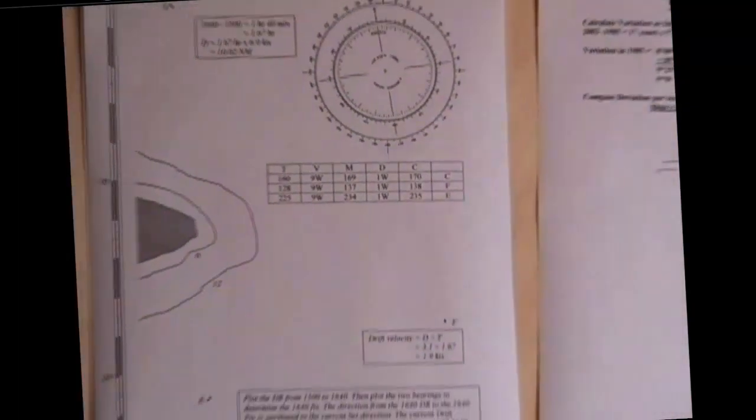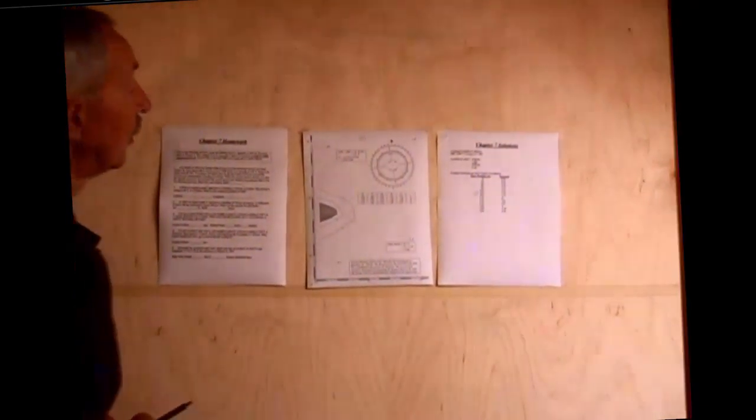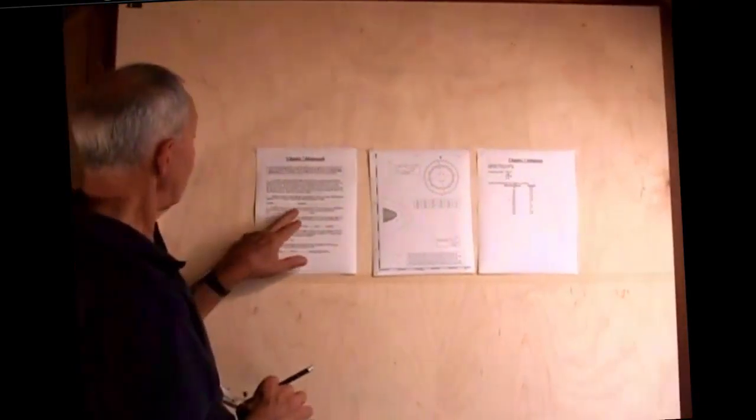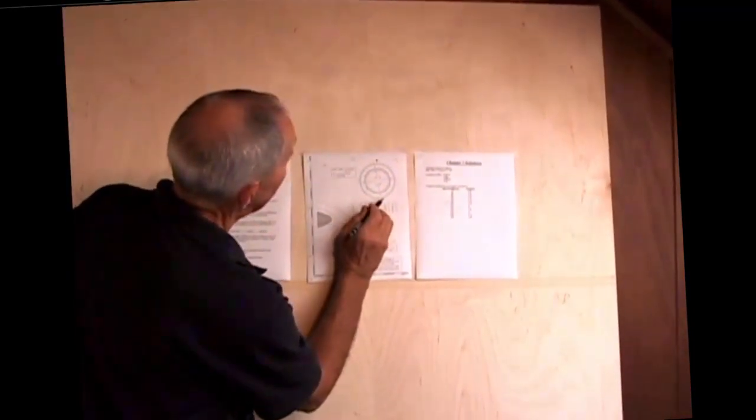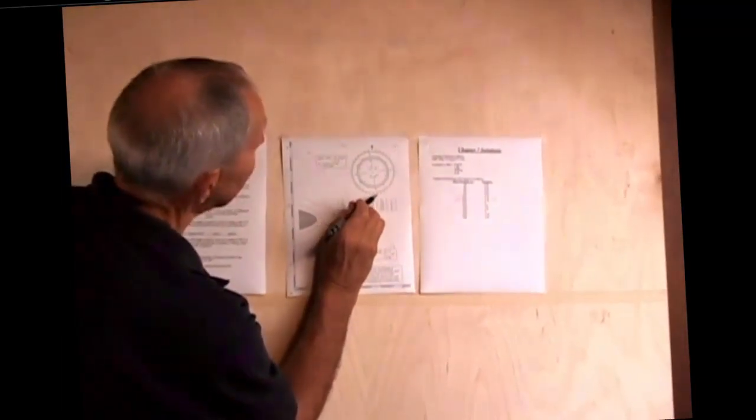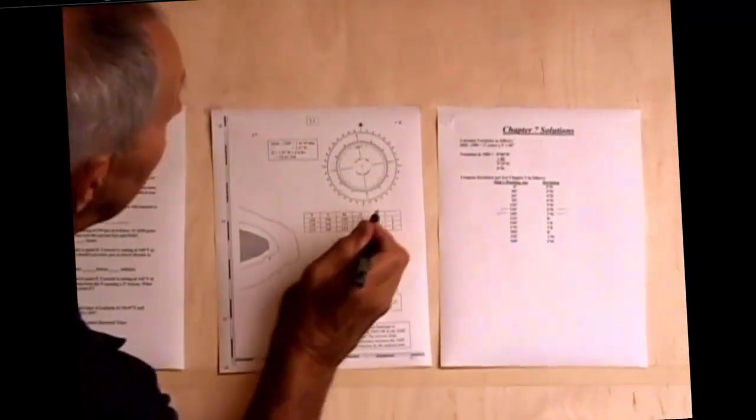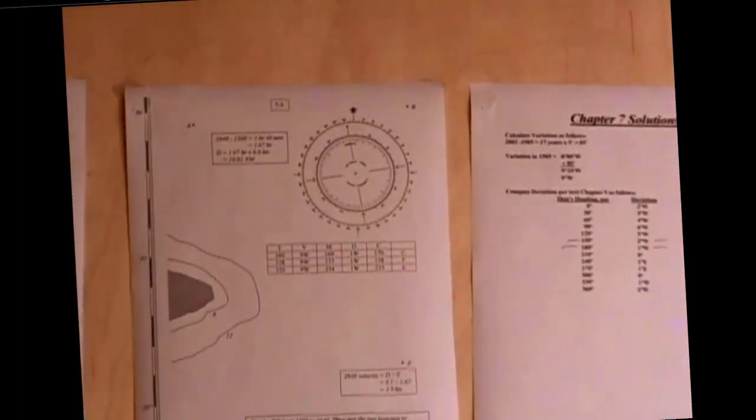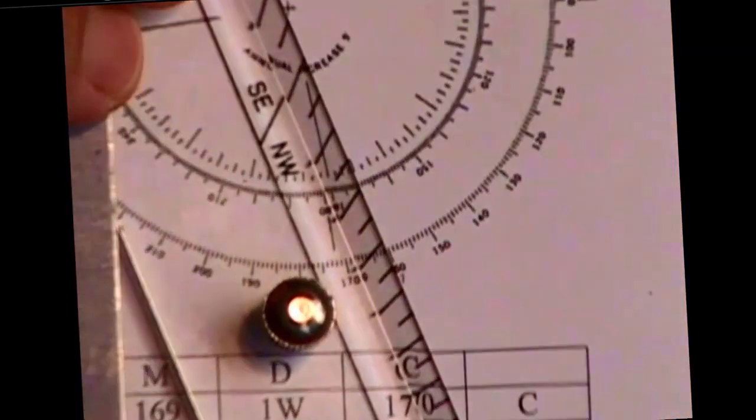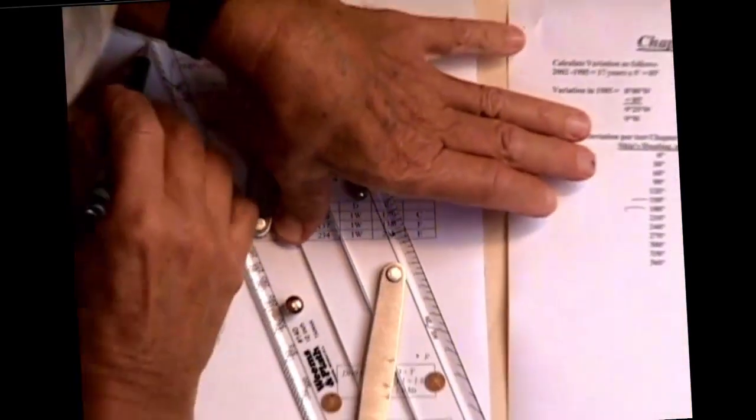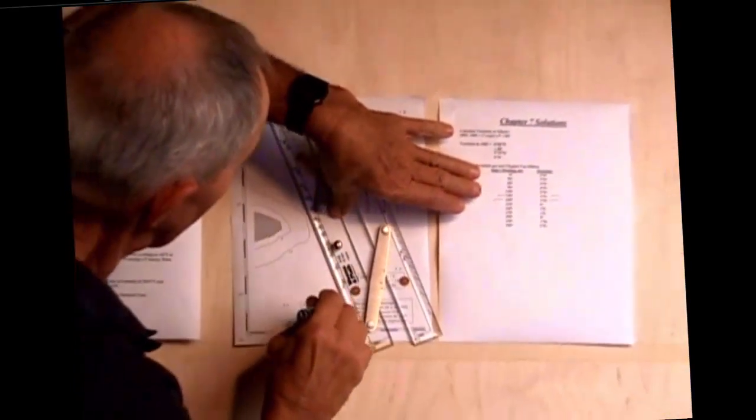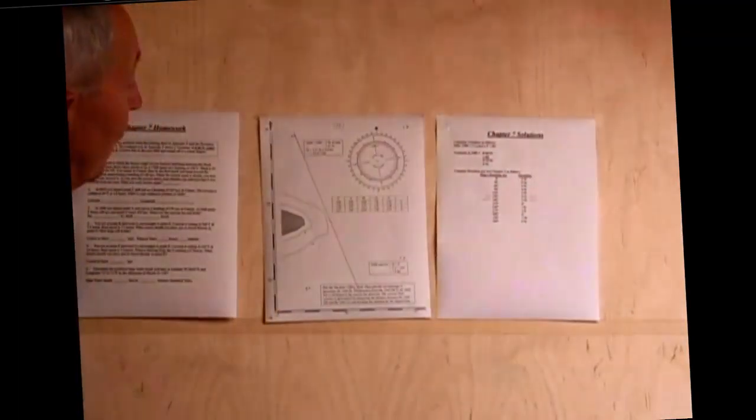Let's start out with our plotting now. We're going to plot our course of 160 true starting from point A. Here is 180 true, 170 true, 160 true. I'm going to plot my parallel rules through 160 true, move them over to point A, hold it nice and tight, and draw my course line.